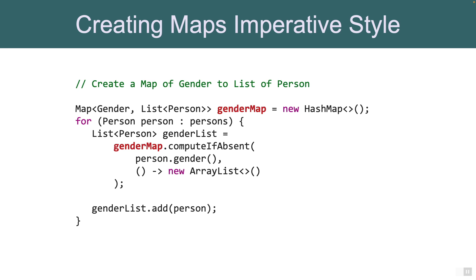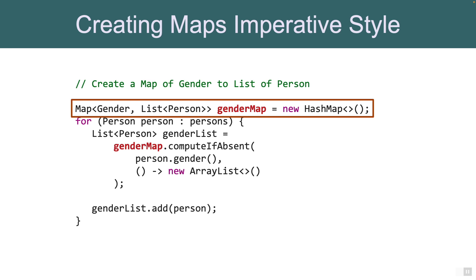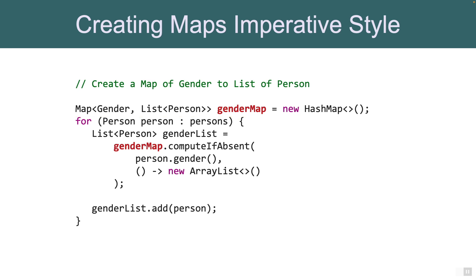But what if we want to convert into maps instead of lists? Here's one example where we use imperative style and not functional style. We create a gender map and then iterate over the person list. For each person, we add it to the gender map, using computeIfAbsent as a shortcut. Even though that is convenient, it's not really ideal because as Java developers we tend to repeat that same code again and again. So functional style has taken over — let's see that.